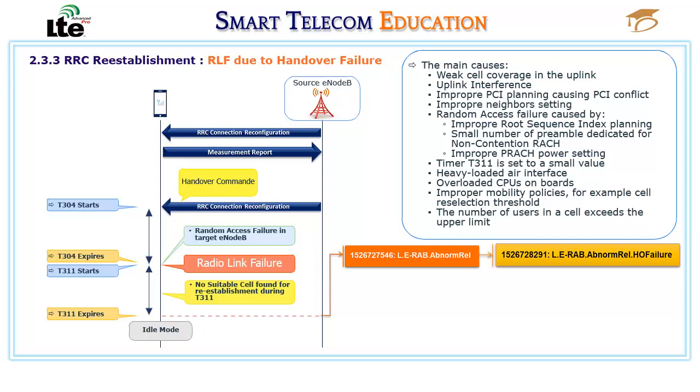Additional causes include improper mobility policies — for example, a small reselection threshold — and the number of users in a cell exceeding the upper limit.